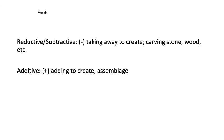All right, y'all. Sculpture, darling. So we're going to break it down into two different types of sculpture, plus or minus. Reductive or subtractive is taking away to create — carving, stone, wood, etc. Additive is adding to create, or assemblage. So it's either plus or minus.